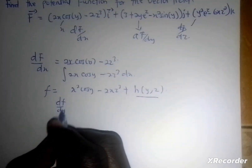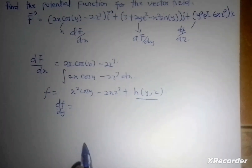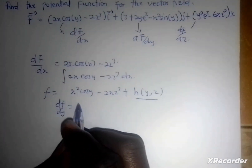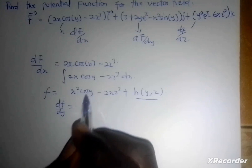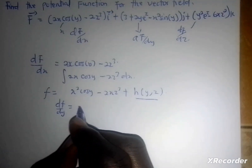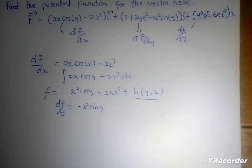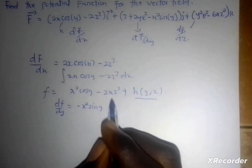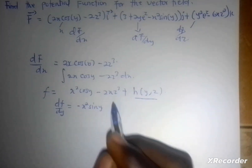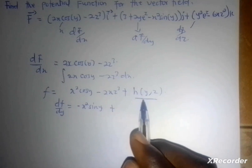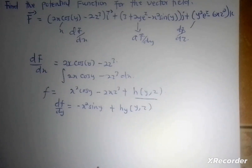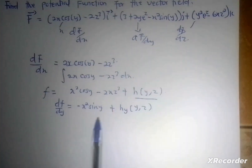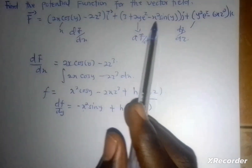So df/dy is simply equal to: since we have x squared, if I differentiate it with respect to y, only the cos(y) term is affected, so I'm going to get negative x squared sin(y). Then when differentiating the other terms with respect to y, everything will be zero. But from the h(y, z) term, I get the partial derivative of h with respect to y. I can then compare this to the f sub y component I have in the question. We realize that the negative x squared sin(y) terms match, so they cancel.